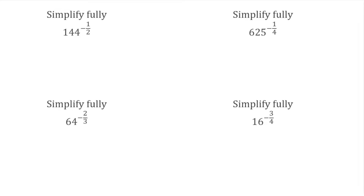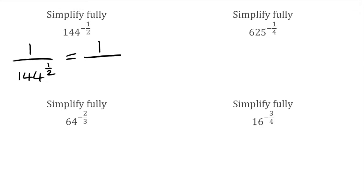For this first example, we've got 144 to the power of negative 1 half. Because we have our negative power, we know we can write this as 1 over 144 to the power of positive 1 half. Just like the questions before, because we've got a 2 on the bottom, that means we're going to find the square root. So this one would simply be 1 over — and the square root of 144 is 12.